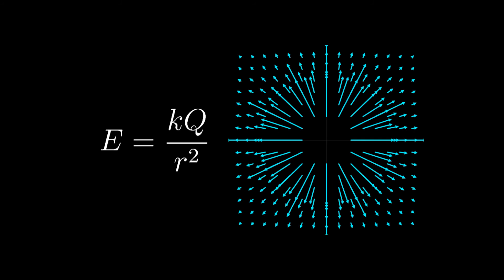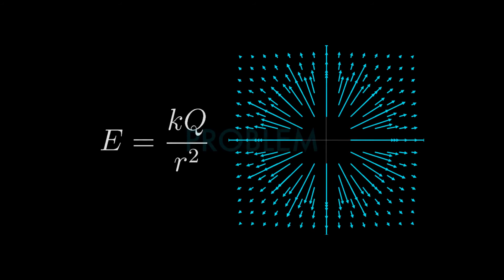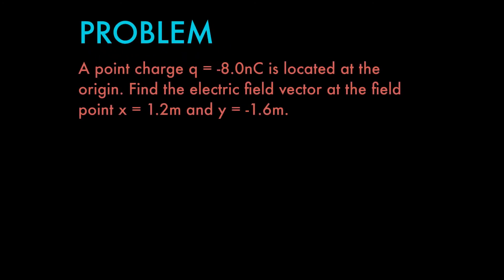Let's take a look at a practice problem. We have a point charge that's located at the origin and it has a value of negative 8 nanocoulombs, that's negative 8 times 10 to the negative 9. We need to find the electric field vector at the field point x equals 1.2 meters and y equals negative 1.6 meters. So how do we go about doing that? Well, first I'd like to start with drawing a simple diagram. So here's our source charge, and then 1.2 meters across and 1.6 meters down gives us where our field point is located.